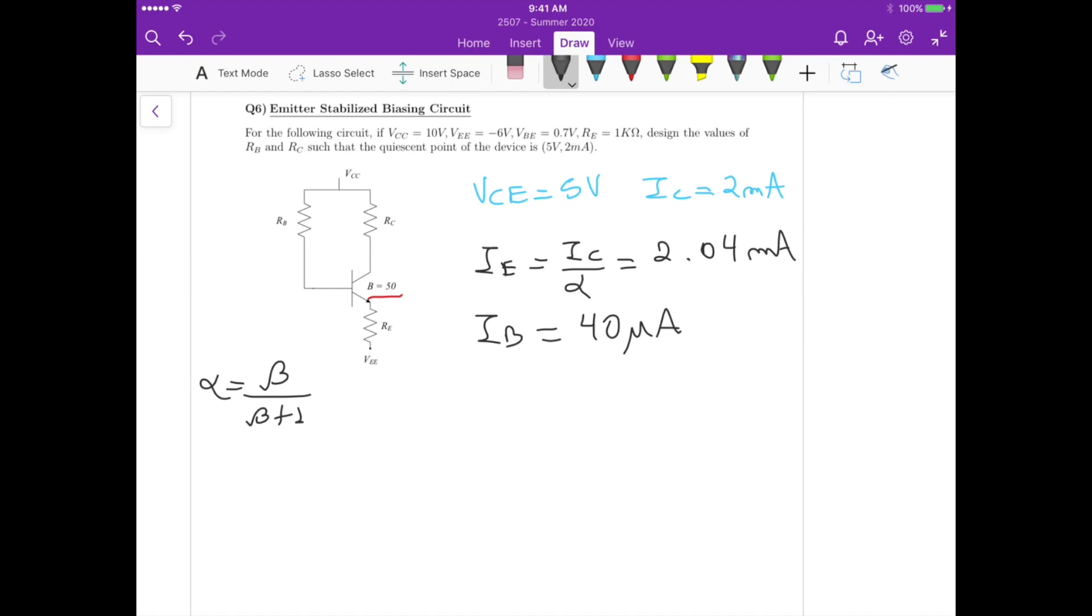Now, if we take, we know the value of the emitter resistance, we know the value of VEE. So if we take VE, which is the voltage here at the emitter, minus VEE, which is the voltage here at the other terminal of the RE, that should be equals to the value of RE times the current that's flowing through the emitter resistance, which is IE.